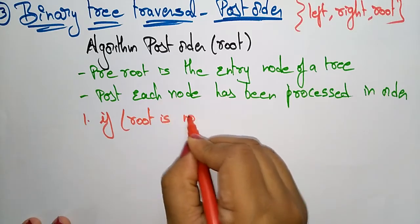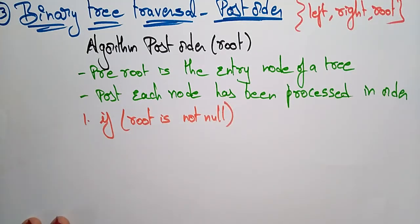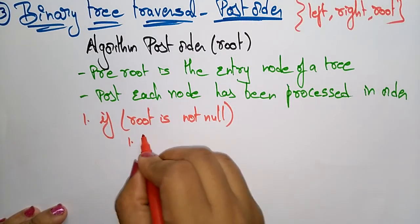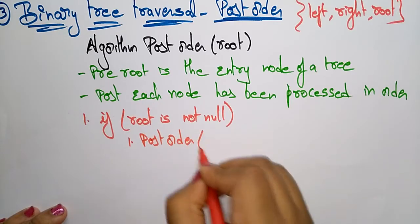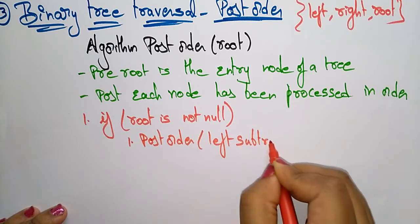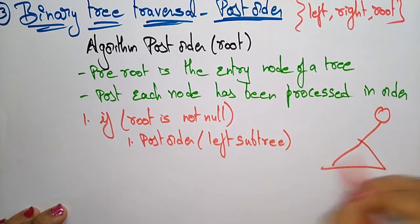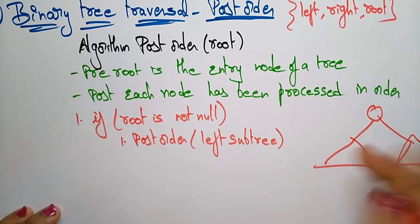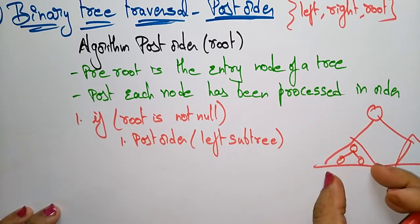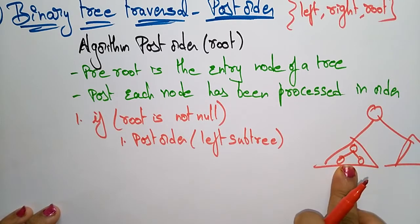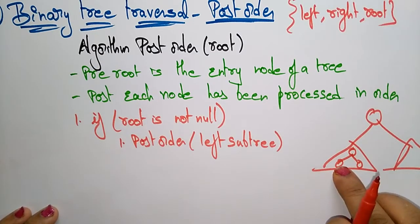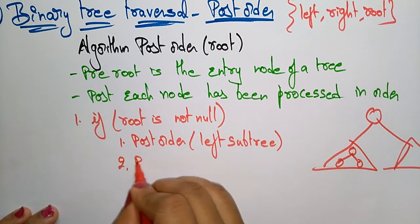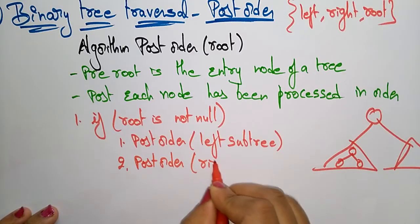First, you have to check if root is not null. If root is not null, that means there are some nodes present in the tree. In post-order, you have to visit the left subtree first. Whatever left subtree is present in the tree, first visit it. After visiting the left subtree, there is a subtree here, so you have to follow the post-order technique: first left, right, root.